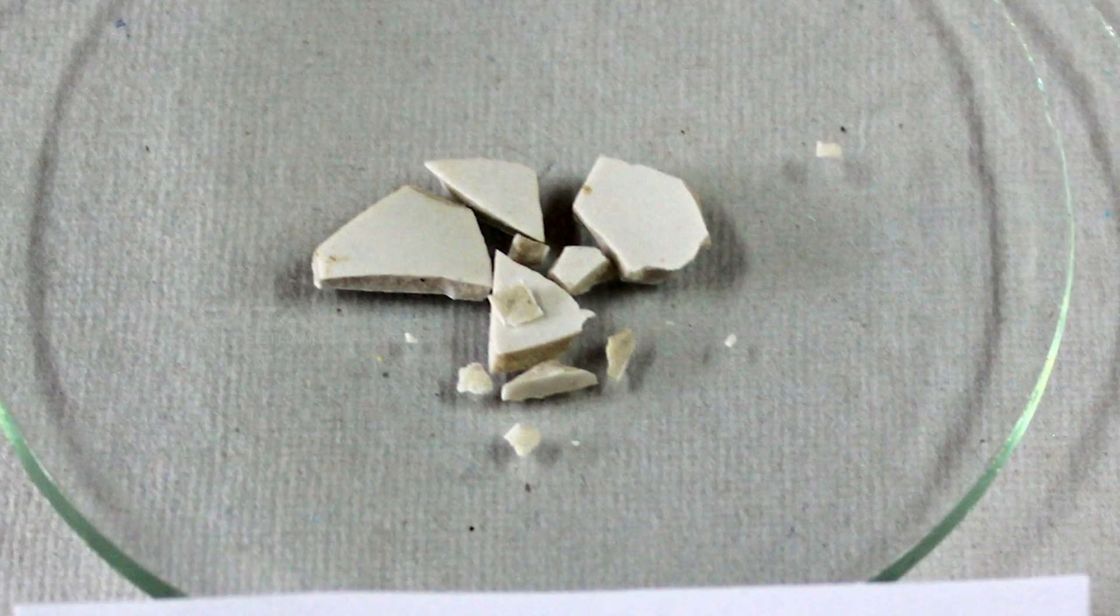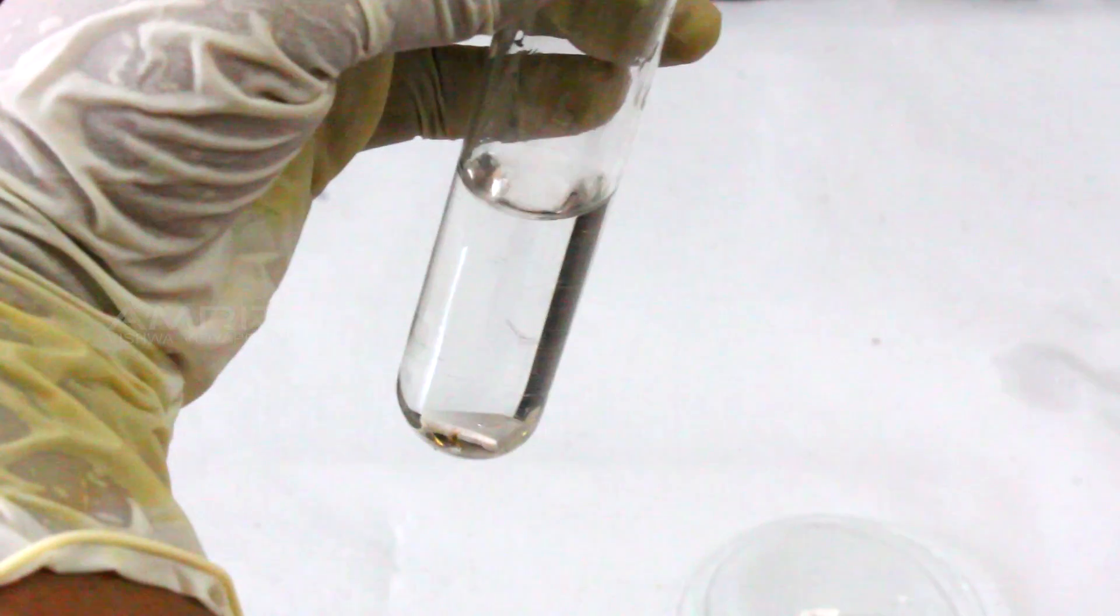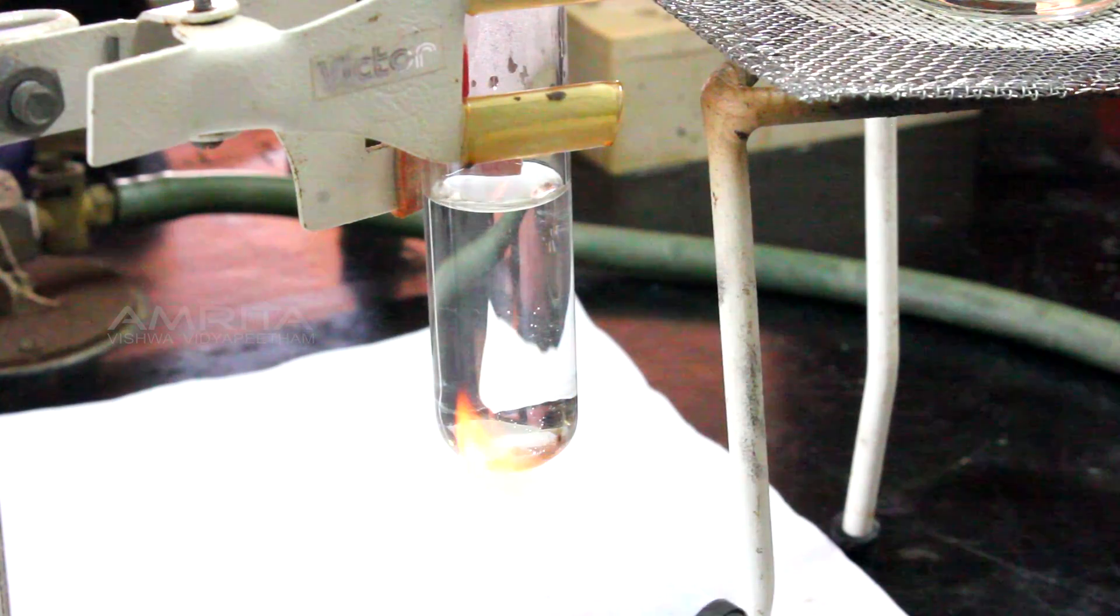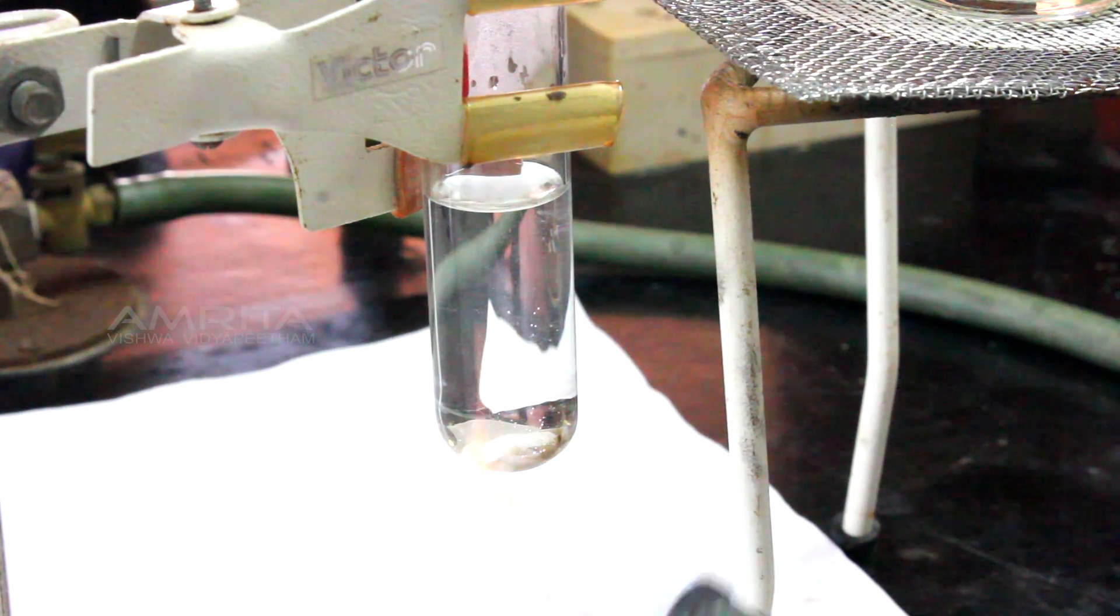Precautions: Pieces of porcelain chips should be added to the water before heating the boiling tube. Water should be heated only by rotating the tube over the flame.